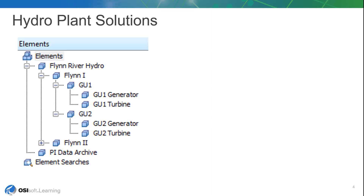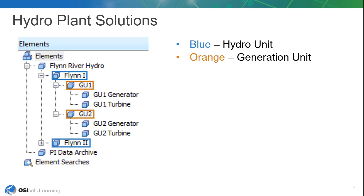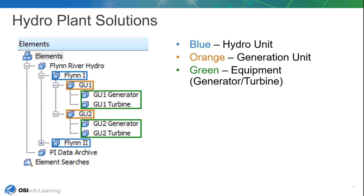The AF hierarchy, shown here and on page 5 of your workbook, features three main levels under our company element called Flynn River Hydro. Underneath that, we have Flynn 1 and Flynn 2, which are the Hydro Unit Elements. Within each Hydro Unit Element, there are Generation Unit Elements — two Generation Units within each Hydro Unit. The last level is the Equipment within each Generation Unit, so each Generation Unit will have one Generator and one Turbine. As mentioned previously, this AF structure has been utilized in most of the PI ProcessBook displays, and we want to make sure we keep that AF structure in our migrated PI Vision displays.